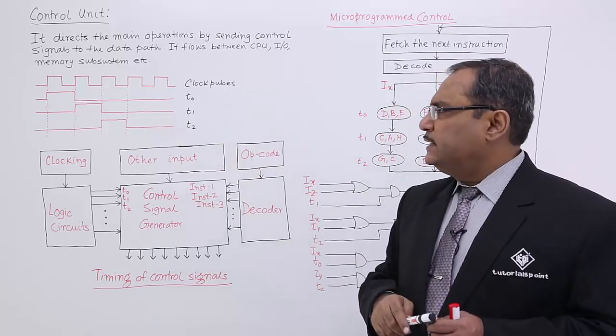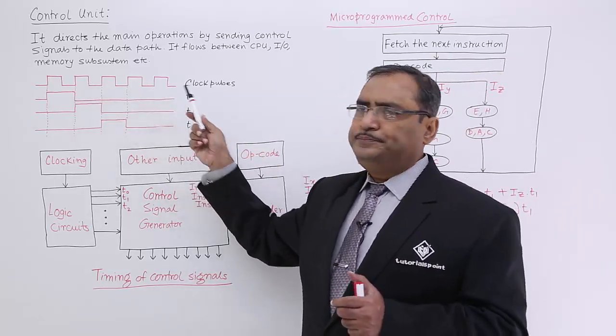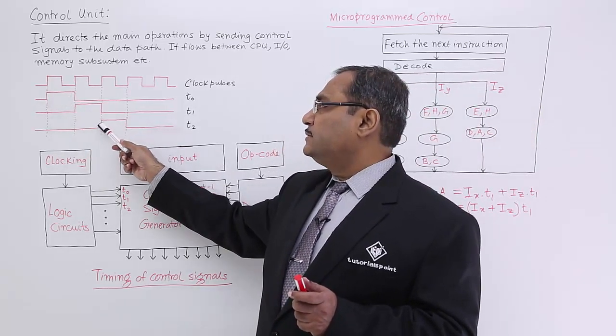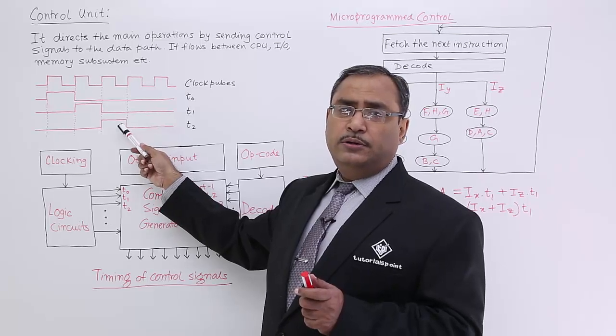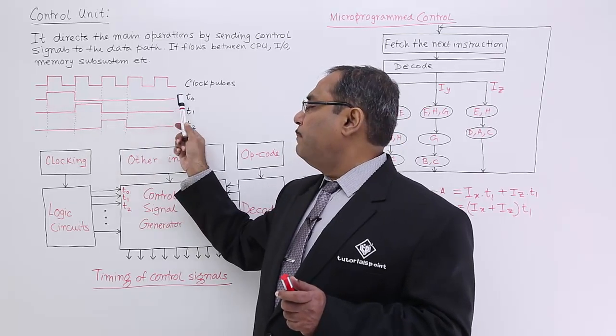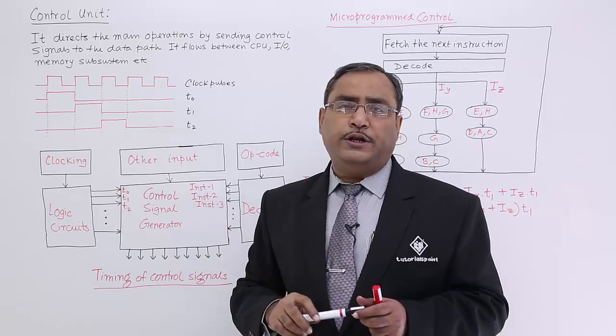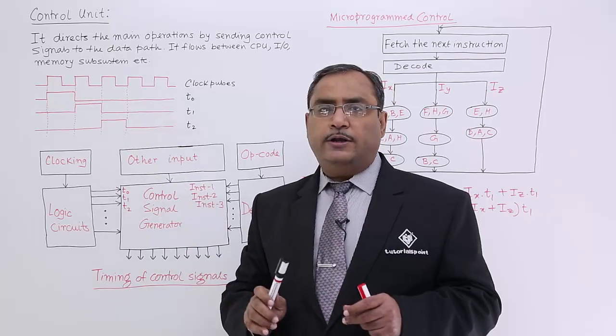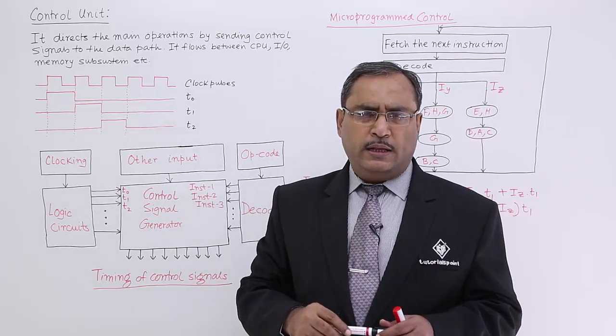For example you can say that this is the clock pulse and you see this is the first cycle, this is the second cycle, this is the third time period and so on. First, second, third I am marking them as T0, T1, T2. In the first case it will do something, in the second cycle it will do something and so on.